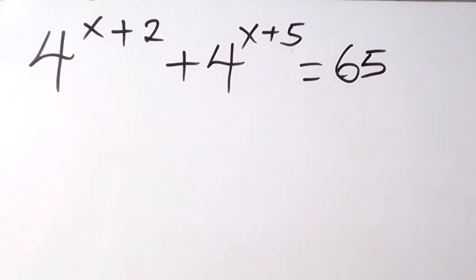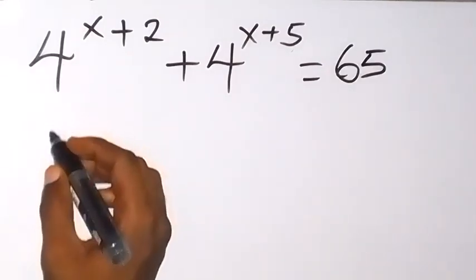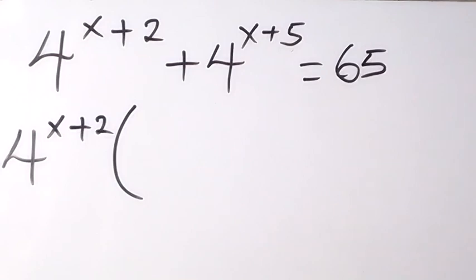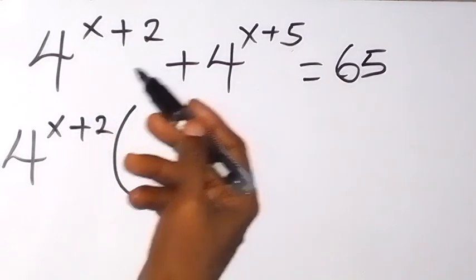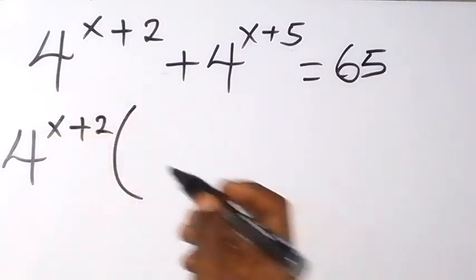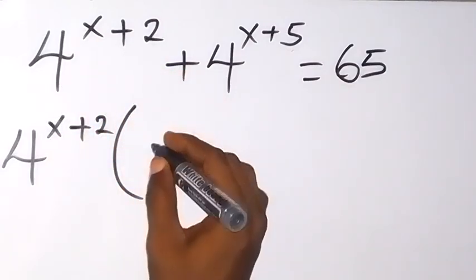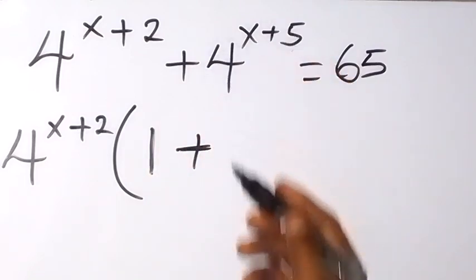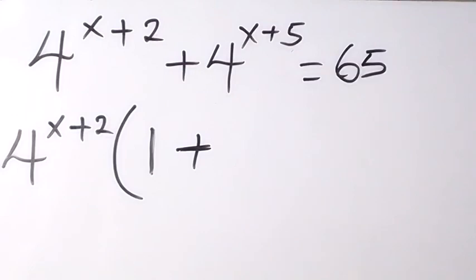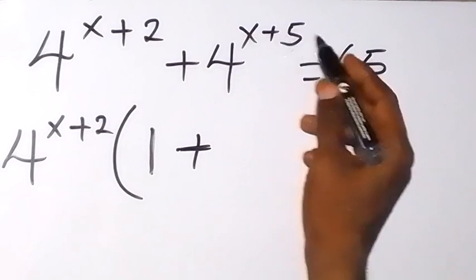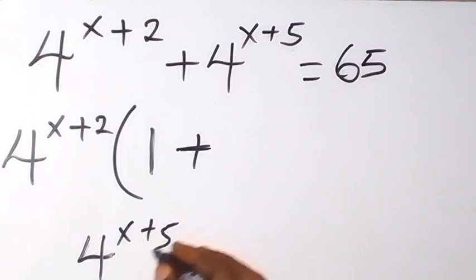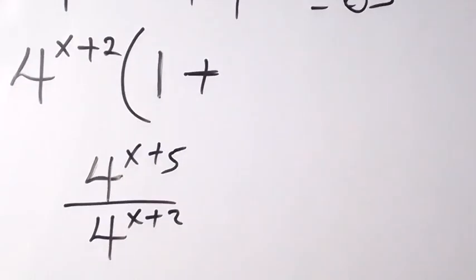Now, from here, let's factor 4 raised to the power x plus 2 out. So when we take it out from this equation, we are going to use it to divide. So when 4 raised to the power x plus 2 is divided out, we have 1. And plus, what we are going to have left is: we are dividing 4 raised to the power x plus 5 by 4 raised to the power x plus 2. And don't forget the law of indices.